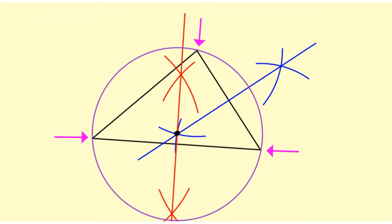You'll see that all three vertices lie on the circle, so we see that the circle is circumscribed about the triangle.